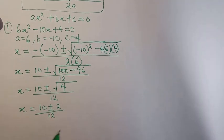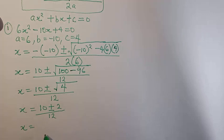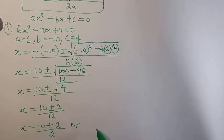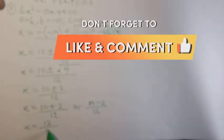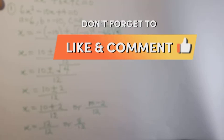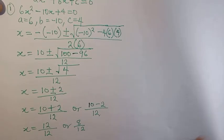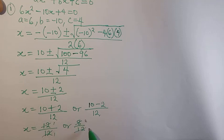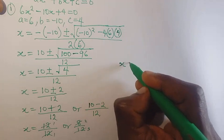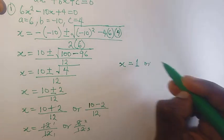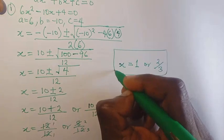This means x equals to 10 plus 2 over 12, or 10 minus 2 over 12. So x equals to 12 over 12, or 8 over 12. Simplifying: 12 over 12 is 1, and 8 over 12 reduces to 2 over 3. So x equals to 1 or 2 over 3, and that is the final answer.